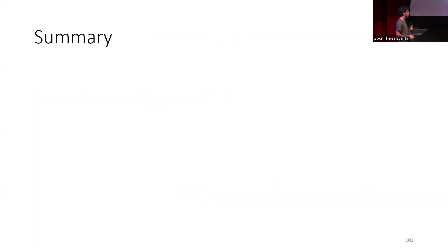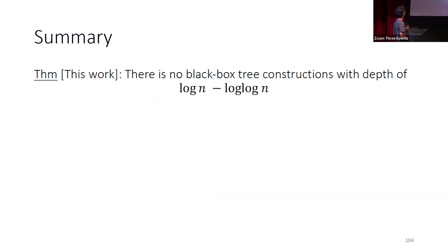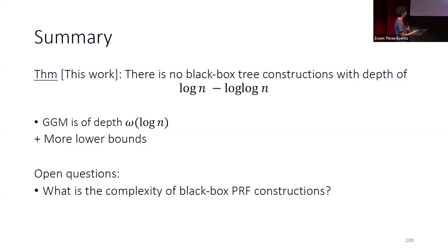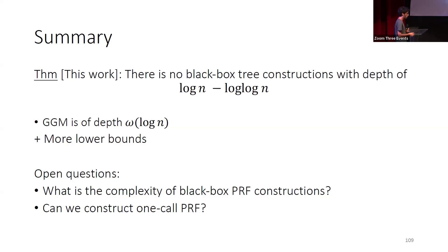To summarize, we showed a lower bound on tree constructions: the depth must be logarithmic, which is nearly tight with the GGM construction. We have additional lower bounds in the paper. Open questions include understanding the complexity of network PRF constructions and, more importantly, ruling out the one-call PRF construction, which we still don't know how to do.